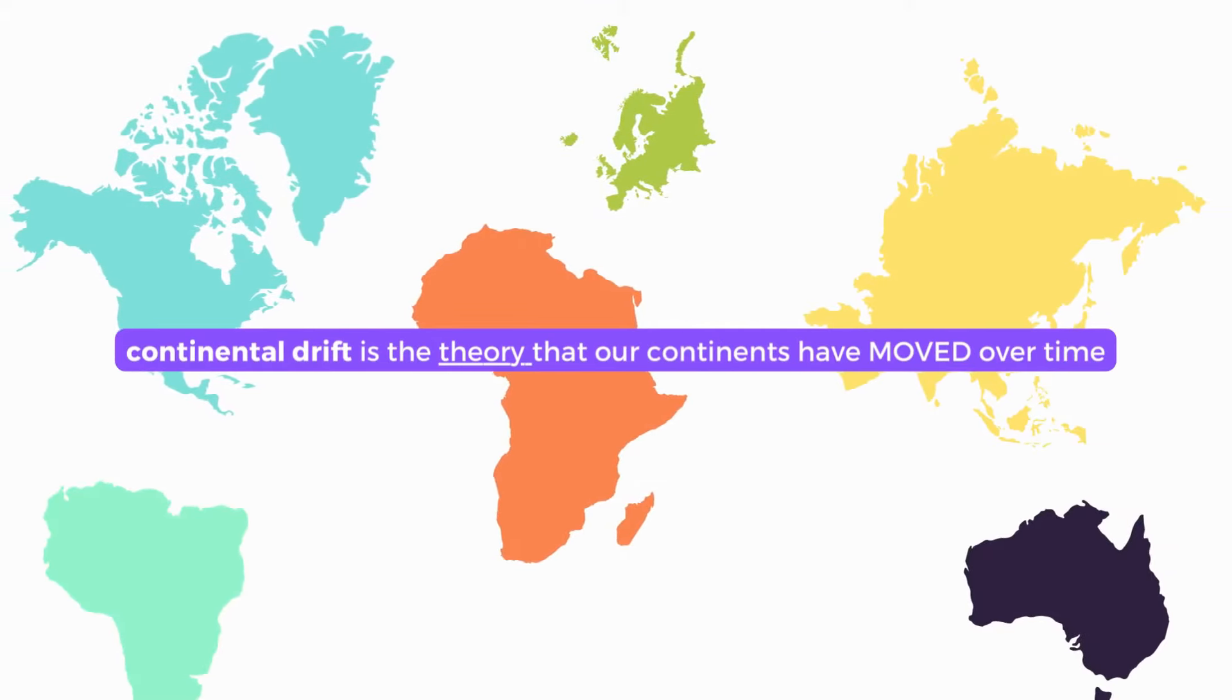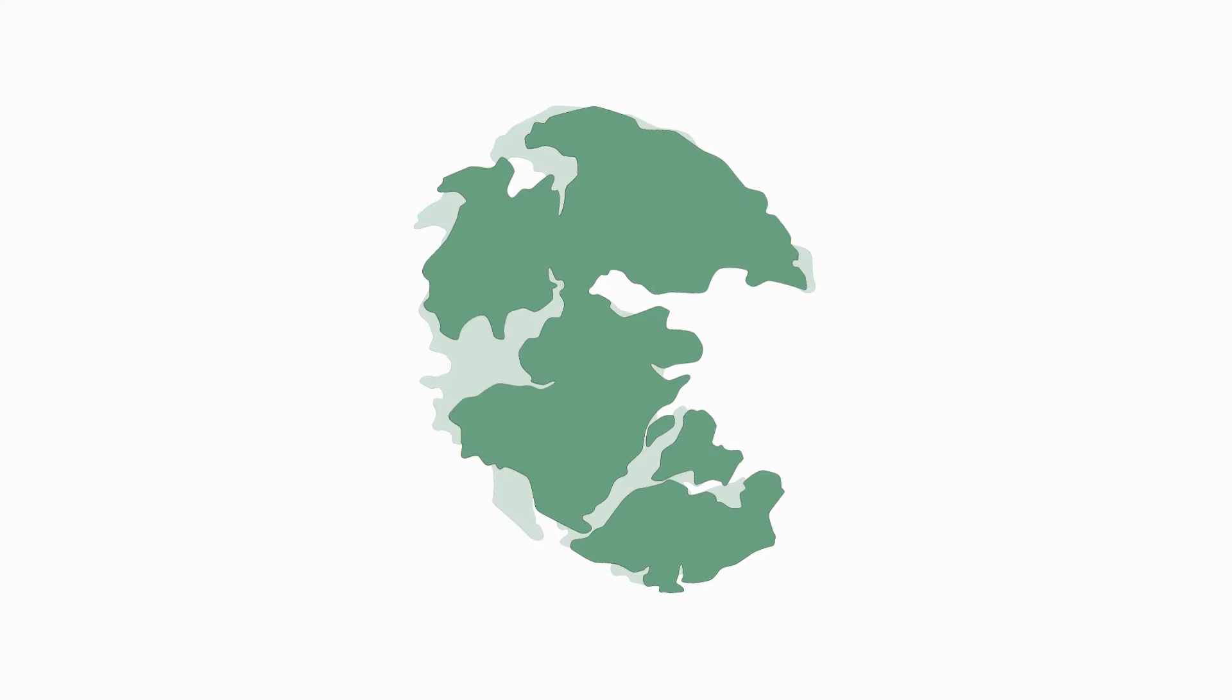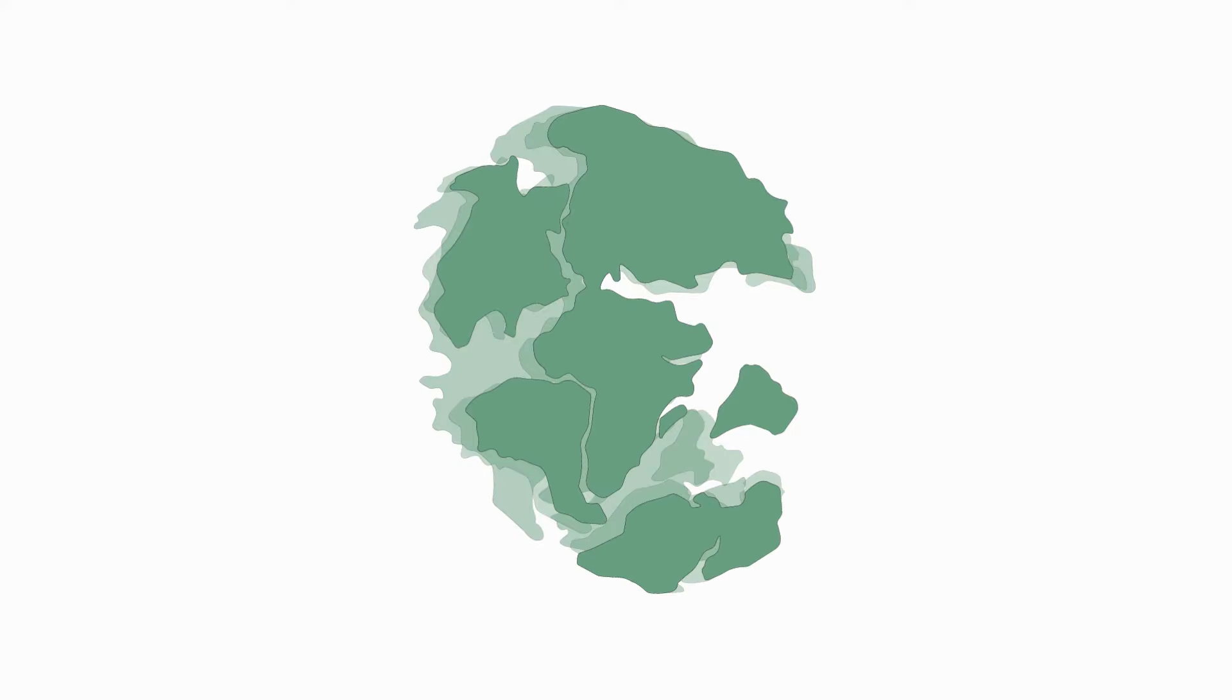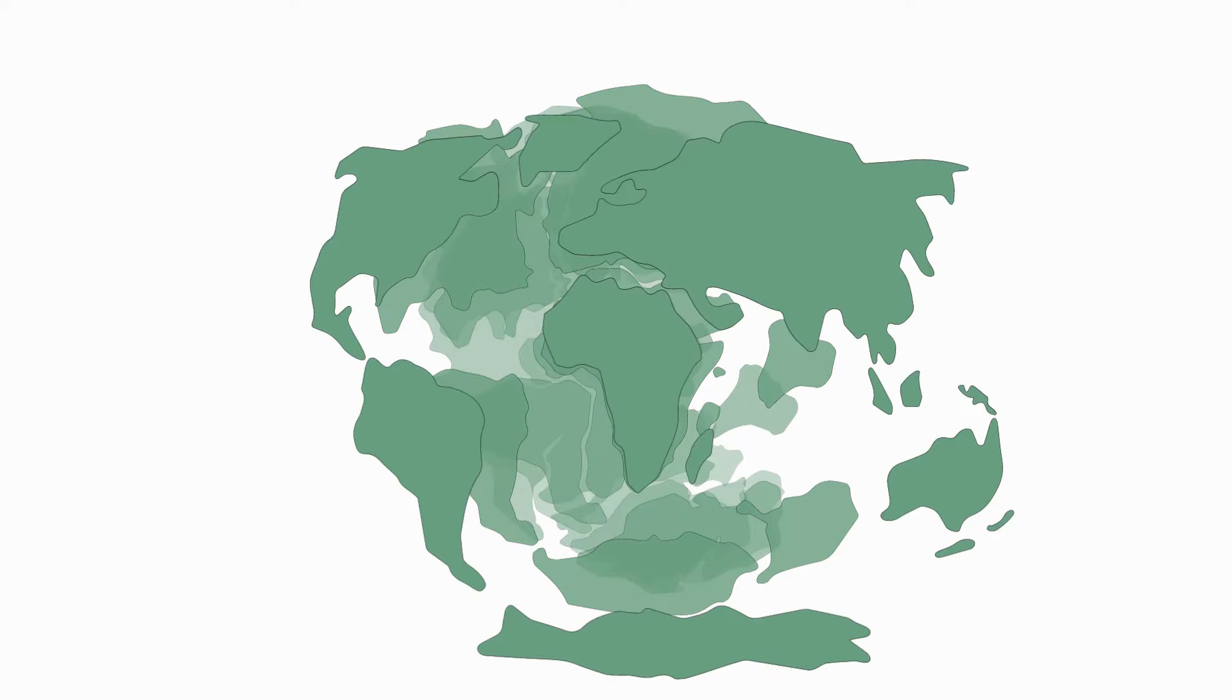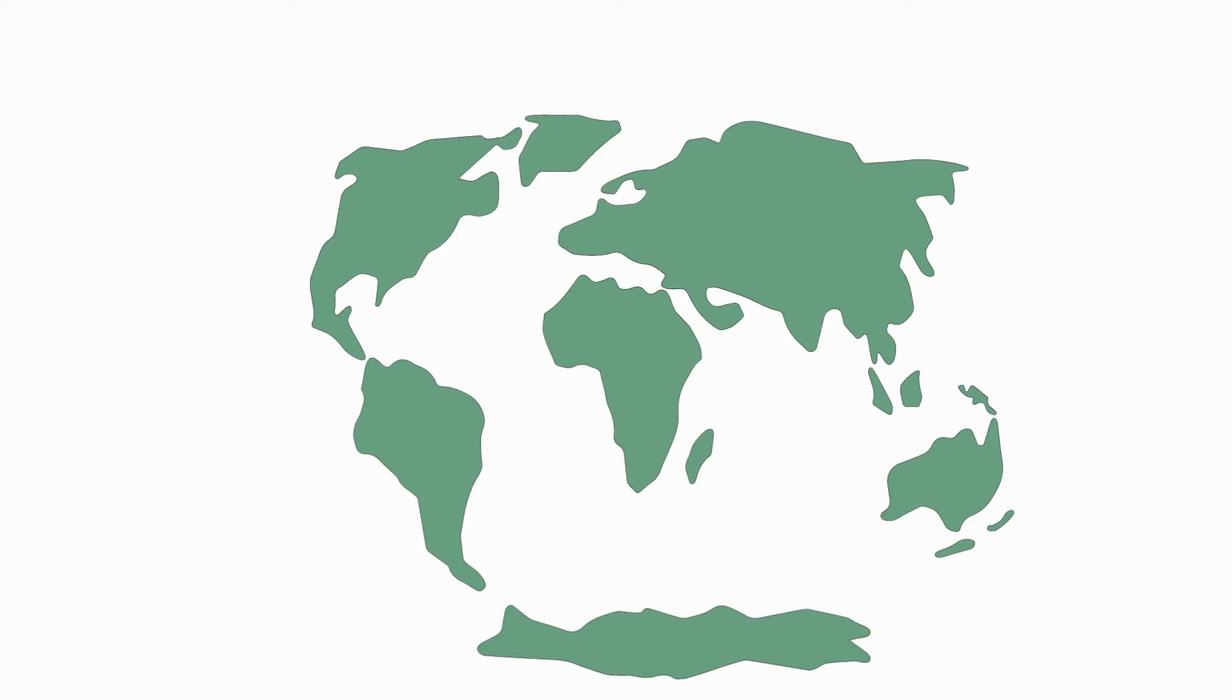Continental drift is a theory that our continents have moved over time. Millions of years ago, a supercontinent incorporated basically all of the earth's land masses and over time split apart into the world as we know it today.